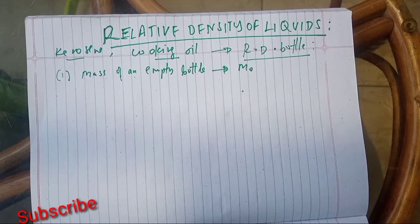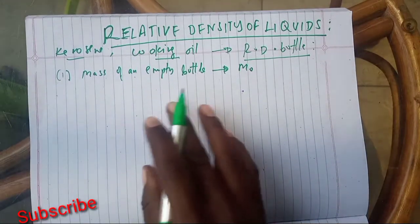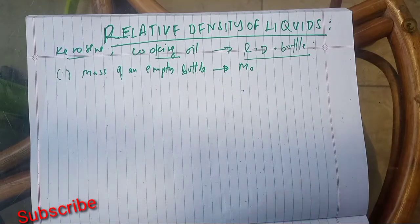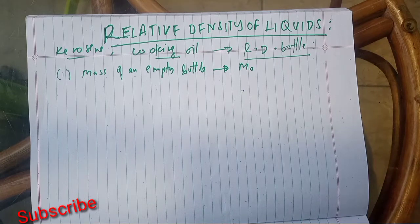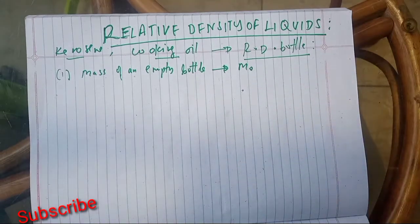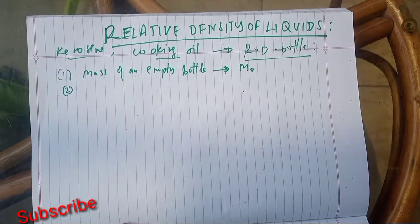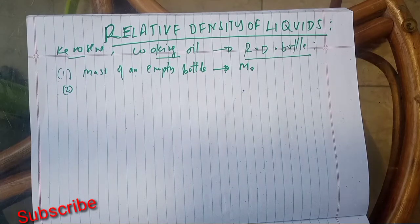After you have measured the mass of the bottle, you pour the liquid into the bottle — the liquid whose relative density you want to determine, for example kerosene or cooking oil. Then you measure the mass of the bottle plus that liquid, and you name it M1. That is the second mass.